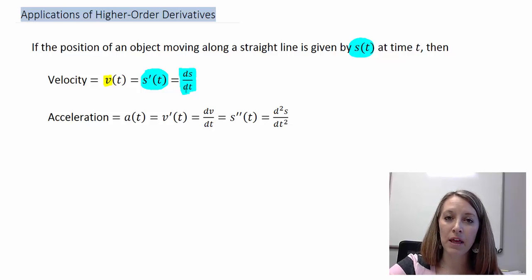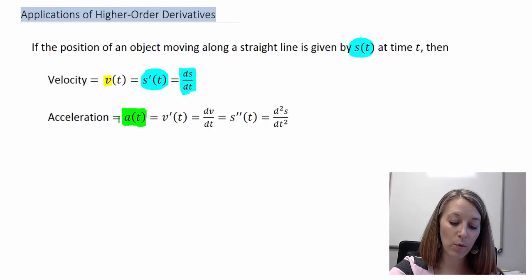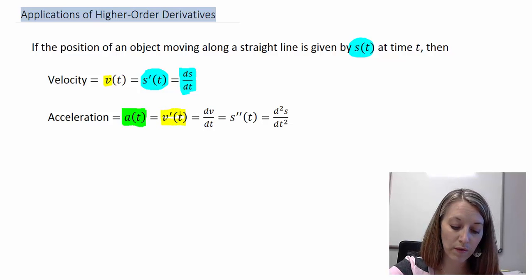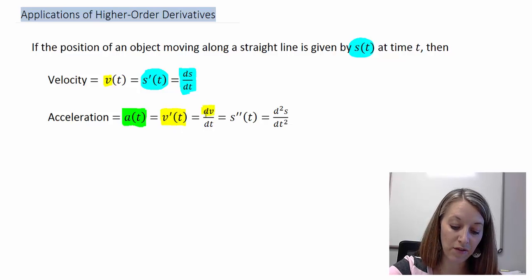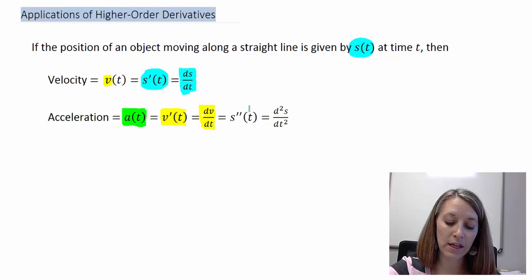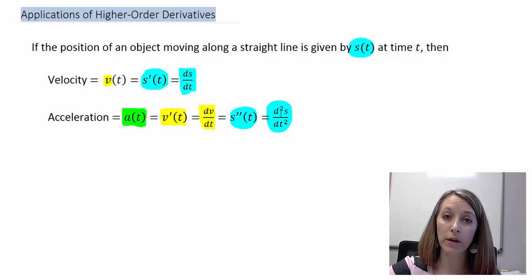The second derivative gives us the acceleration of our particle — whether it is speeding up or slowing down. We get acceleration by taking the derivative of the velocity equation, written as v prime of t or dv/dt. This can also be represented as s double prime of t, or d²s/dt². This is a first application of why we might ever need to take more than one derivative.